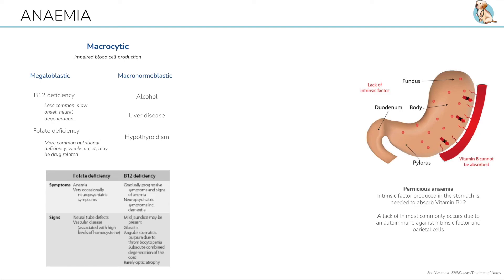Signs and symptoms — think more neurological: numbness and tingling in the hands and feet, balance issues, confusion. It is important not to give folic acid alone to any B12-deficient patient, as even though the anemia is reversible, there is still a neurological deficit.